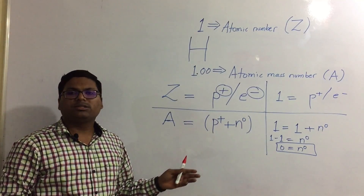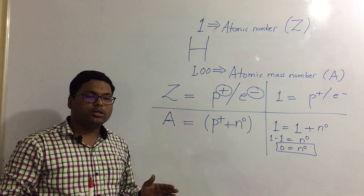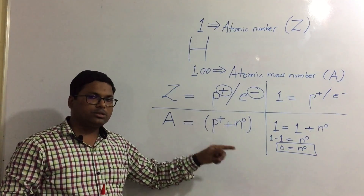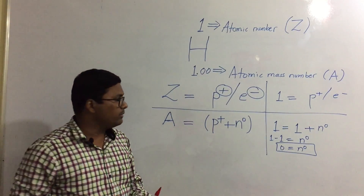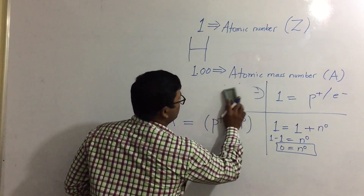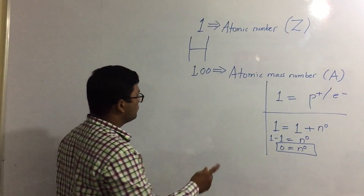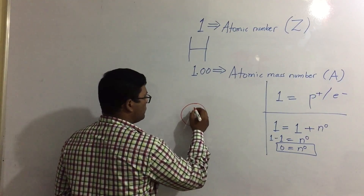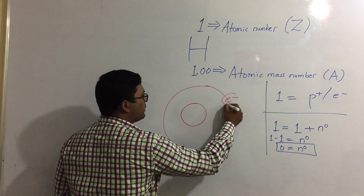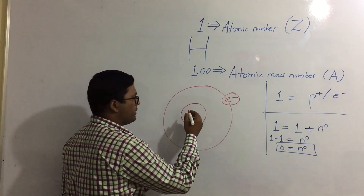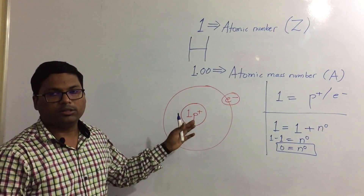So what does this tell us? With the number of protons, electrons, and neutrons calculated, let us draw the structure of the hydrogen atom. This is the nucleus of the hydrogen atom, with a single electron orbiting around it. There is one proton in the nucleus, and there are no neutrons in the nucleus of hydrogen.